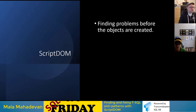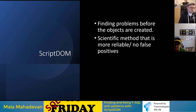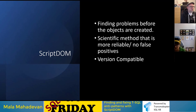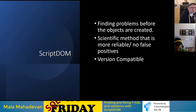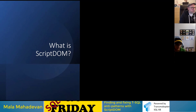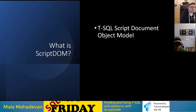ScriptDOM is very useful to find problems before objects are actually created. It is a scientific method — it's not going to give you false positives like a text-based search might. It's version compatible because it's created by Microsoft specifically for this purpose, with one version of the library for every version of SQL Server. So you don't have to make your code backward or forward compatible. ScriptDOM is essentially a DLL — a library.